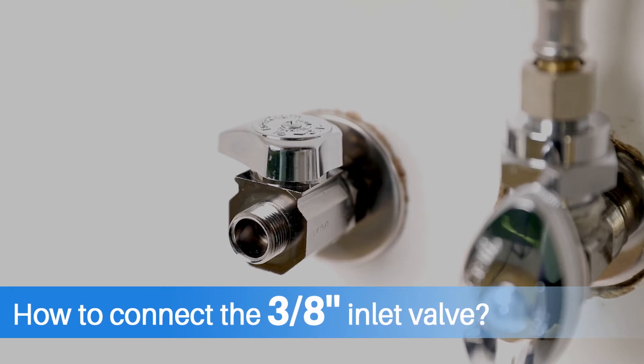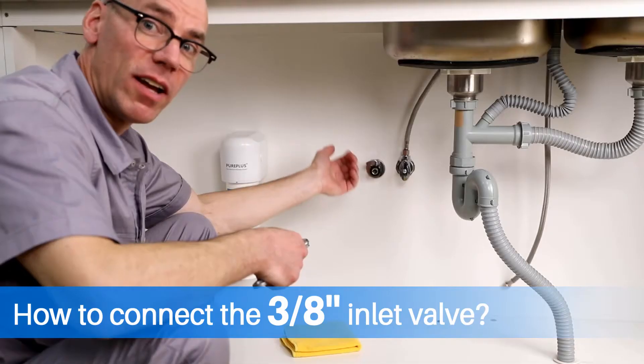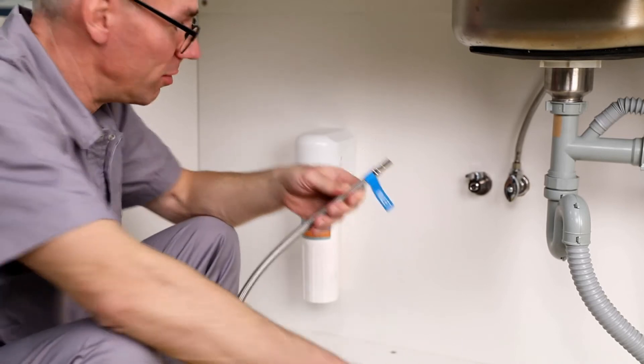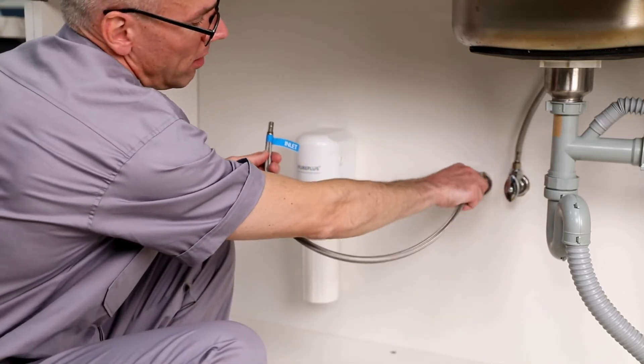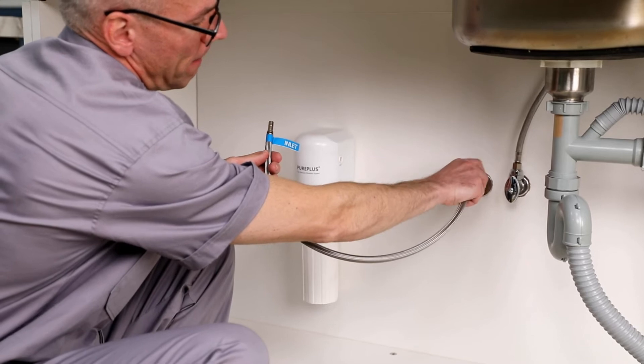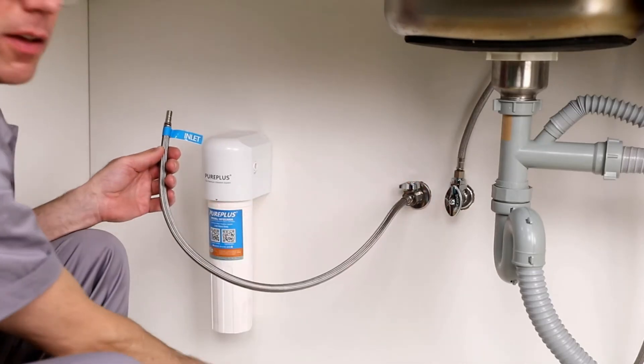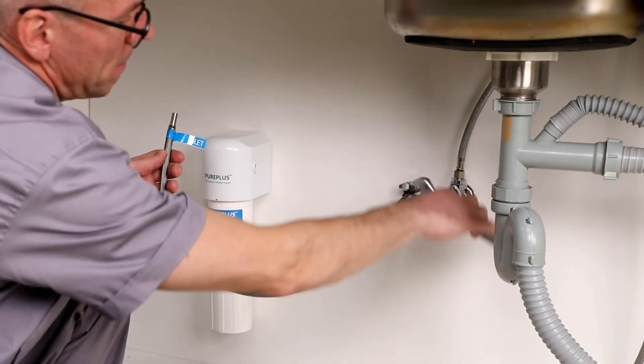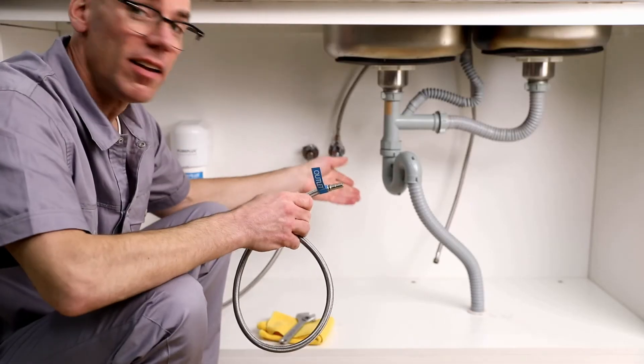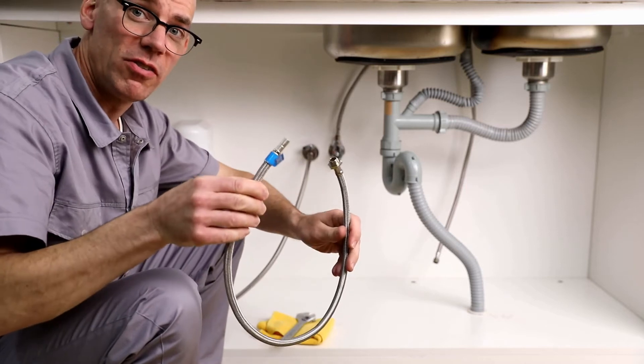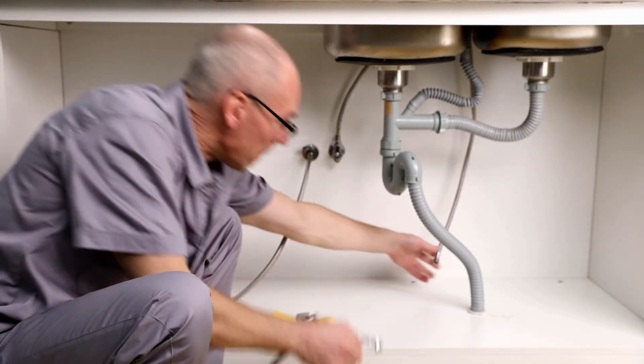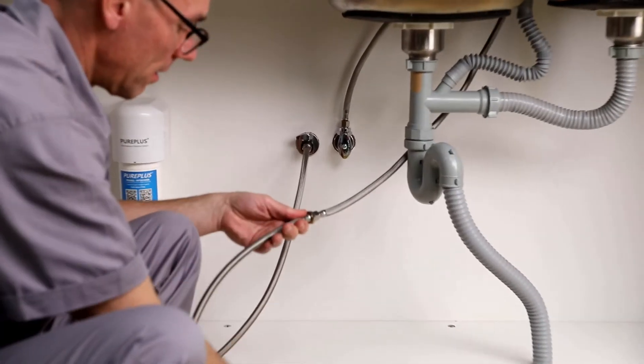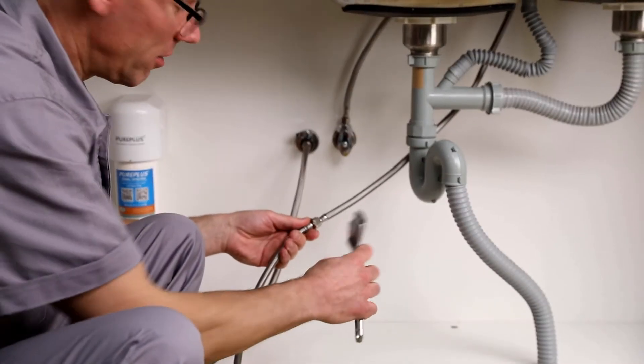If the water inlet valve is a 3/8 inch compression connection, you can connect the system directly. Connect the filtration system's inlet hose with the water inlet valve. Use the adjustable wrench to tighten. Connect the faucet hose with the water filtration system's outlet hose to complete the setup. Use the adjustable wrench to tighten.